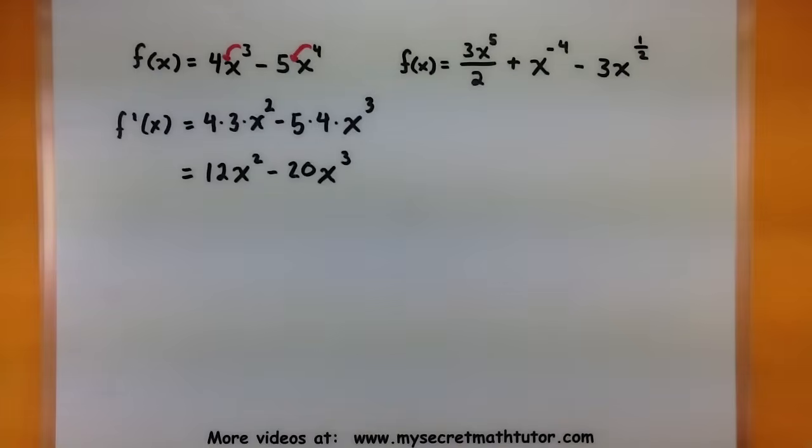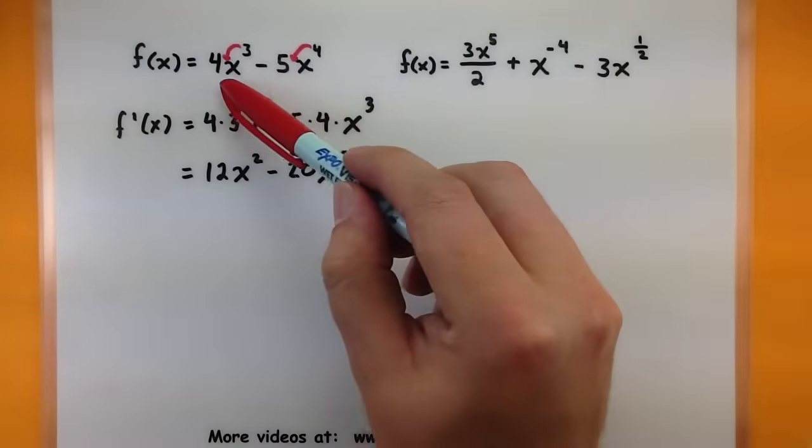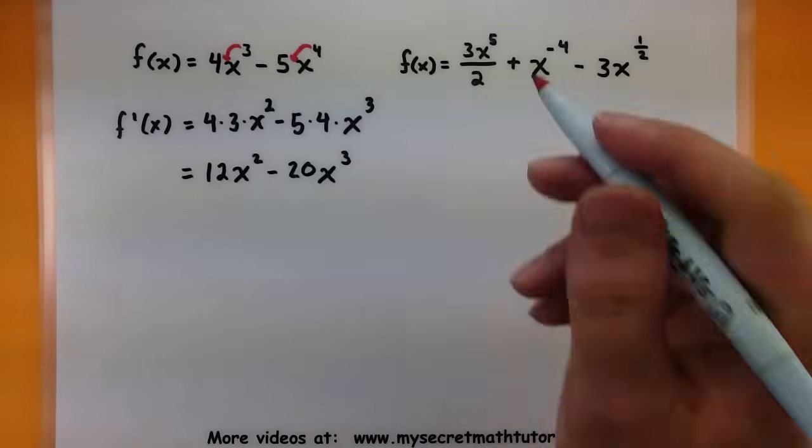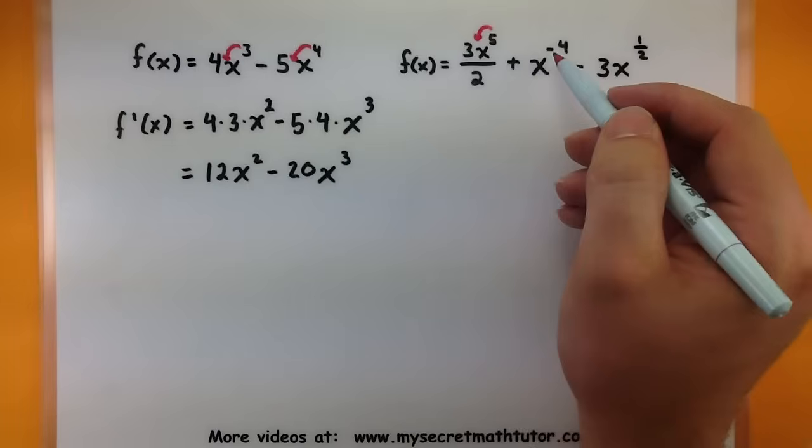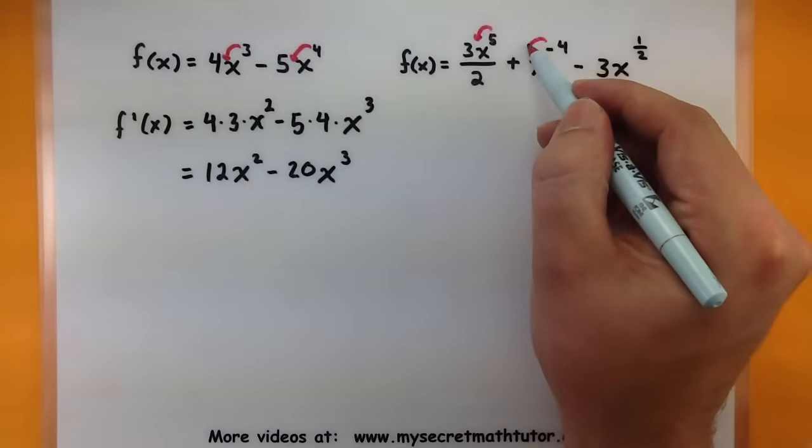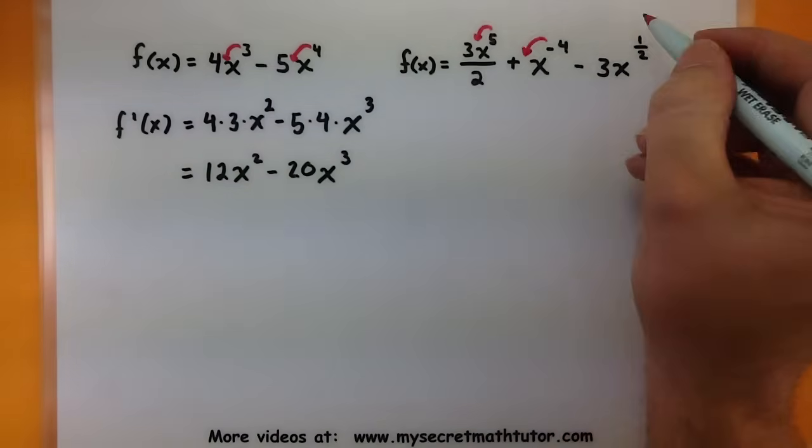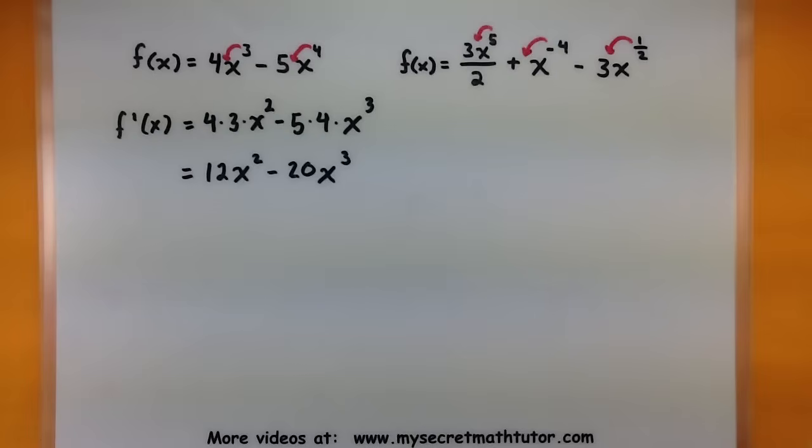In this first one, the three and the two are a lot like these coefficients out here. They're not going to really have much of an effect and I'll simply bring the five down like I would normally. The four in the next part will also come down normally, and since it's a negative it's going to switch that sign. The one half will do the same exact thing, come right out front.